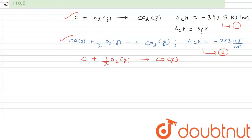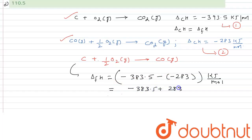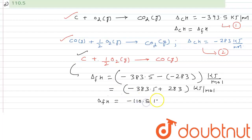Subtracting Equation 2 from Equation 1, the enthalpy of formation is calculated as: minus 393.5 minus (minus 283), which equals minus 393.5 plus 283, giving minus 110.5 kilojoule per mole. So the enthalpy of formation of carbon monoxide is minus 110.5 kJ/mol.